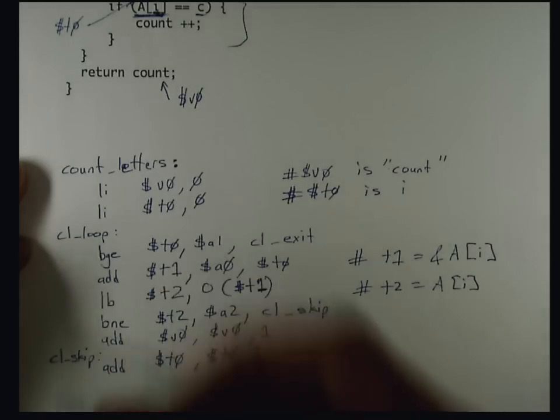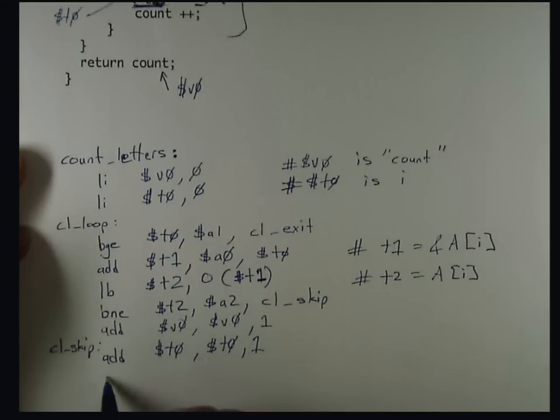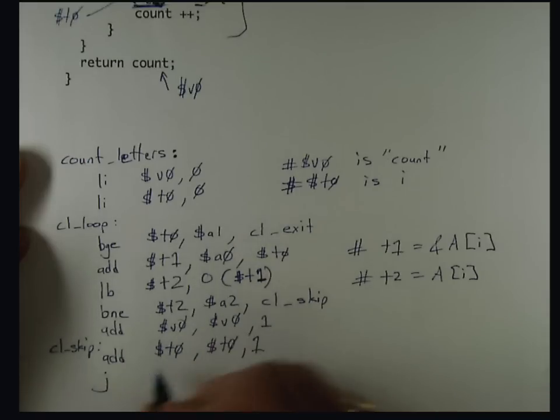Now I'm done with the loop. All I need to do is get back to the beginning of the loop, so I then add an unconditional jump back to the beginning of the loop. So that's the loop.